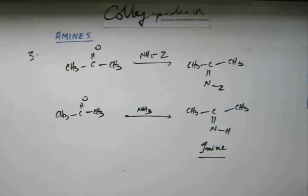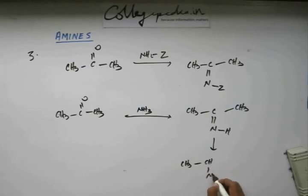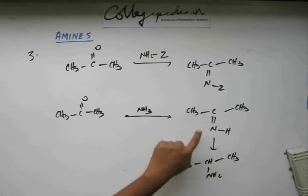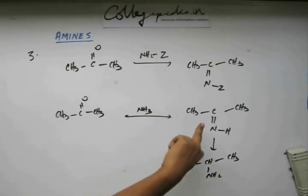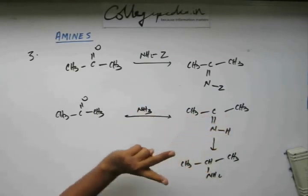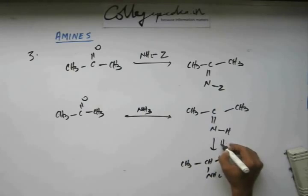And you can tell me what should I do on this imine to get amine. What I have done is destroyed this pi bond, added hydrogen on this carbon, added hydrogen on this nitrogen. Which molecule does that? If you add hydrogen here, one hydrogen on this carbon will be added, one hydrogen on this nitrogen will be added and the pi bond will be broken. So if you carry out simple hydrogenation,